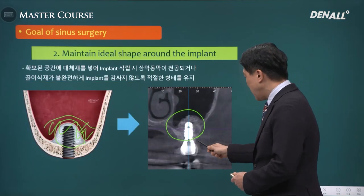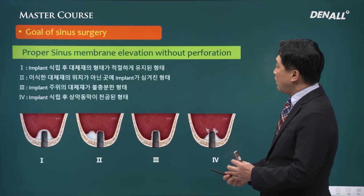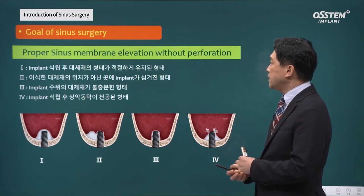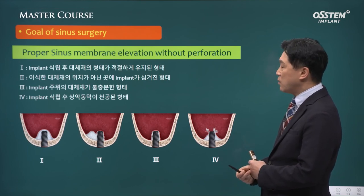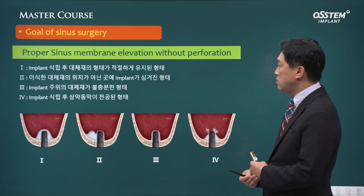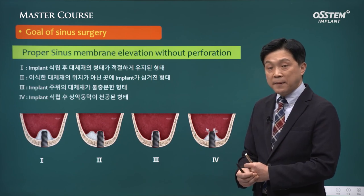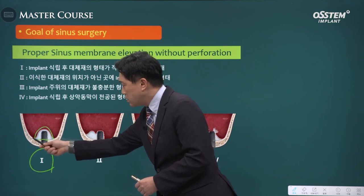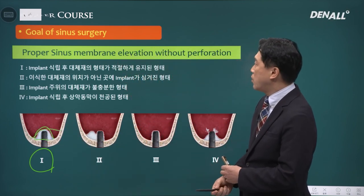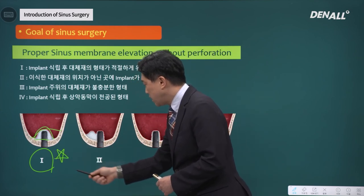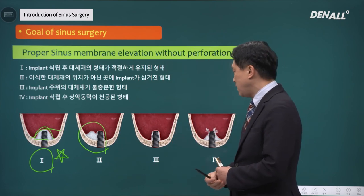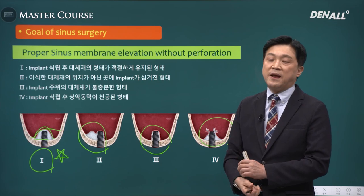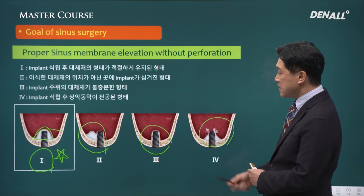The goal of sinus surgery is to get stable bone regeneration. In order to secure sufficient space, doing sinus membrane elevation without perforation is the key, and maintaining the space is also very important. If you look at the four different examples, we can see which is most ideal. As shown in number 1, around the implant, appropriate bone graft materials are positioned and the elevated sinus membrane is well maintained — that is the goal. If membrane elevation is only done on one side, or is incomplete, or if there is perforation and scattering of bone graft material, then it leads to less than ideal situations. The first example is most important.